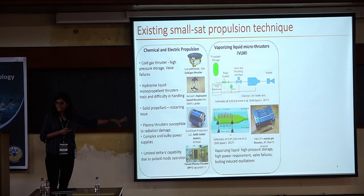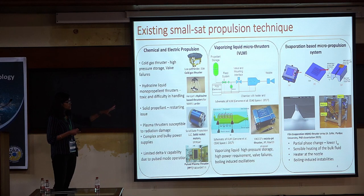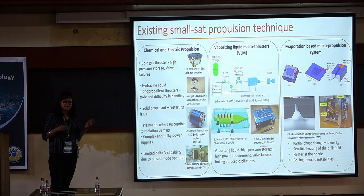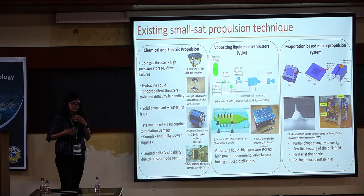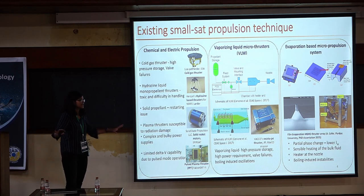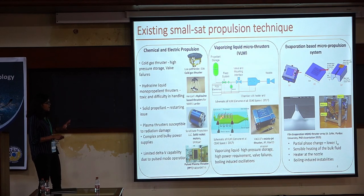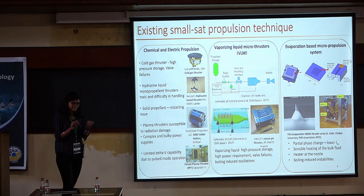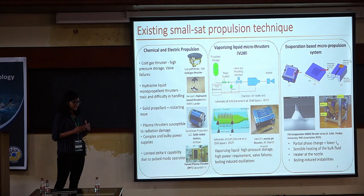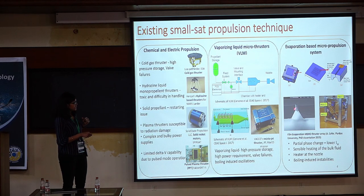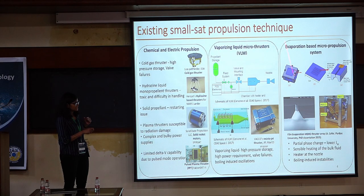This is an overview of different technologies currently in the market for propulsion of microsatellites, at different TRL levels. Most technologies require significantly higher power than 1 to 10 Watts to get 100 micronewton of thrust. What we have is closest to the vaporizing liquid microthruster — the idea is that liquid in a pressurized tank goes to a heating chamber where vaporization occurs, and that vapor passes through a nozzle to produce thrust.